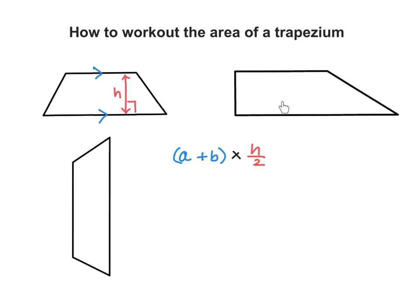Let's illustrate this on another trapezium. Here, once again, the parallel sides are these two. So we would sum these two parallel sides and multiply by half of the height. The height is the perpendicular distance from one parallel side to the other, at 90 degrees. So the height is this distance there — it is also the same as the distance here. We add the parallel sides, that's your a plus b, and then multiply by half of the height.